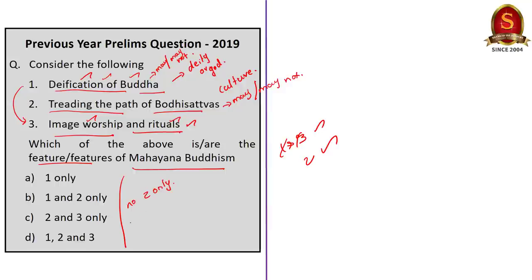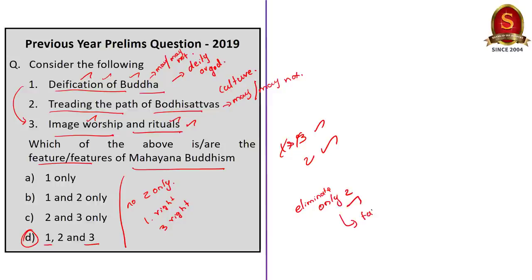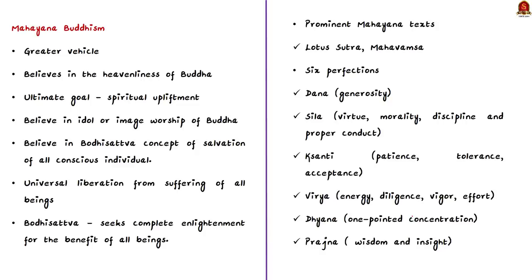Now considering the second probability — statement one is correct — then statement three should also be correct. Search in the answers for any option that has both statement one and three. Option D has both one and three, so that is the right answer. This is how you should approach a question. Don't panic if you didn't study the topic — try to narrow down the options. Here we directly arrived at the answer. There will be instances where you narrow it down to two options; take an educated and informed guess — you have a 50-50 chance. I have given some features of Mahayana Buddhism here; go through it and revise.